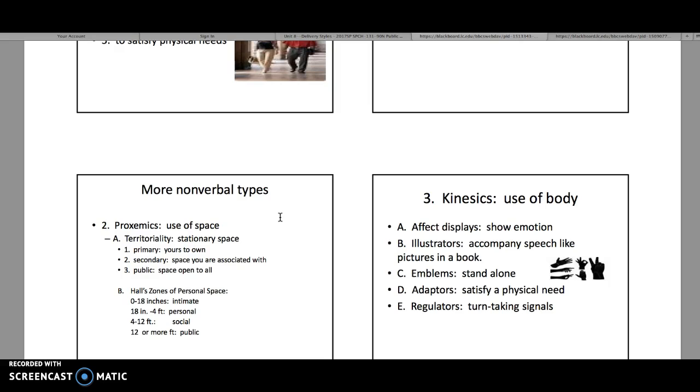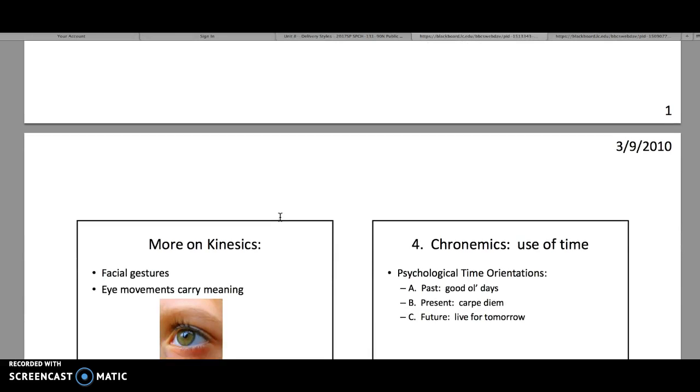Emblems on the other hand stand alone. So if you flip somebody off, that's an emblem. You don't need to say anything. It still has meaning. Adapters are things that satisfy physical needs. If you have an itch, you scratch it. If you need oxygen, you yawn. These are things that you want to minimize when you're at the podium because those get people's attention and they really aren't the message that you're trying to send an audience. And then regulators are the way that you know when it's your turn at conversation.